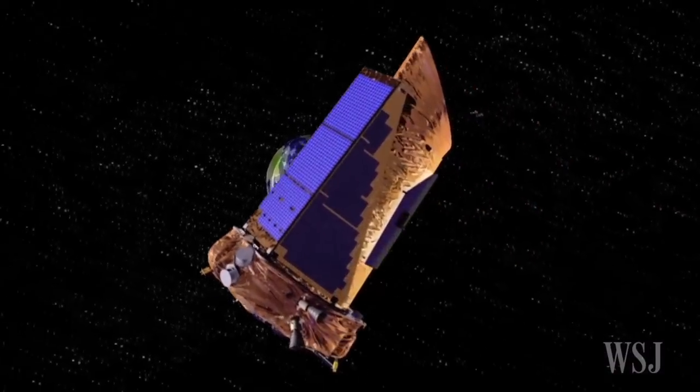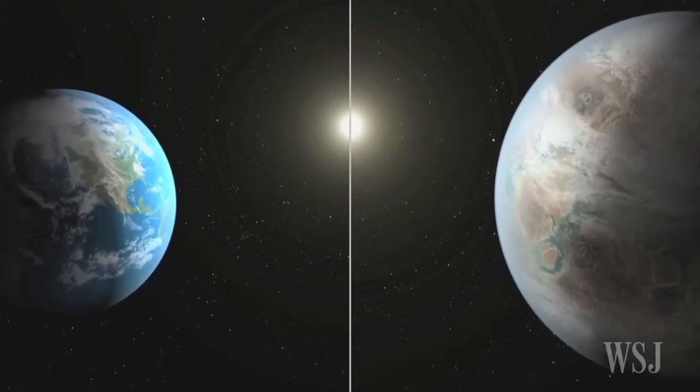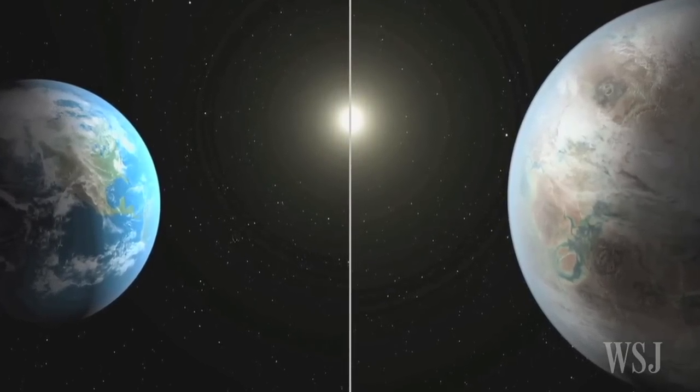Spotted by NASA's Kepler spacecraft, the planet, dubbed Kepler-452b, is believed to be about 60 percent larger than Earth.